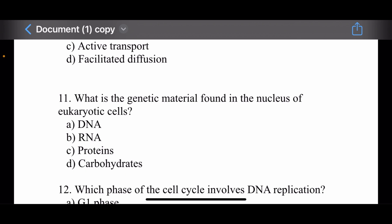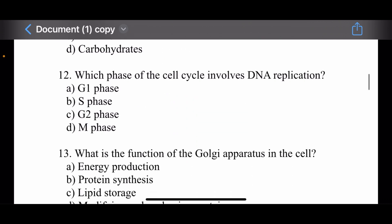Question number eleven: What is the genetic material found in the nucleus of a eukaryotic cell? Options are: DNA, RNA, proteins, and carbohydrates. The right option is DNA. DNA is the genetic material found in the nucleus of a eukaryotic cell.